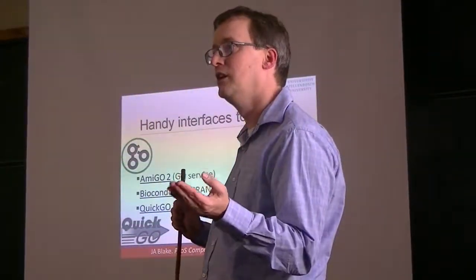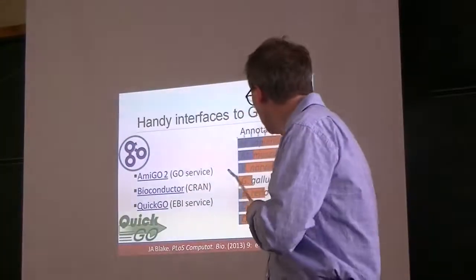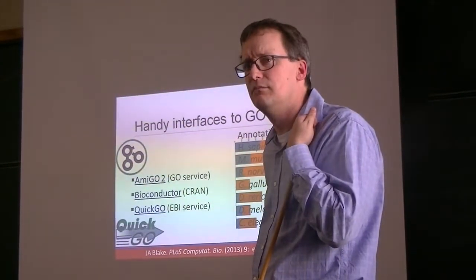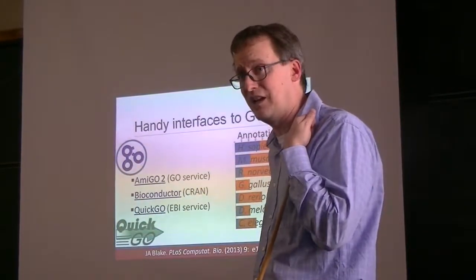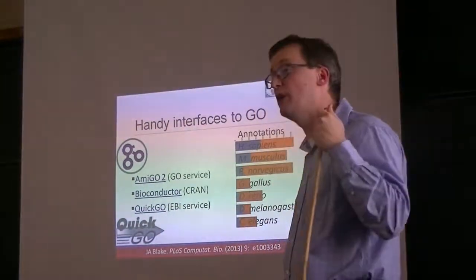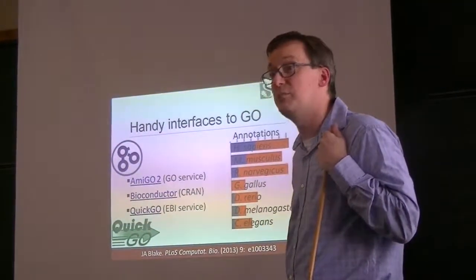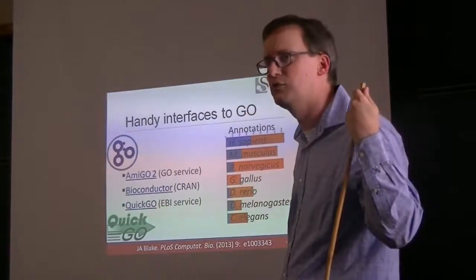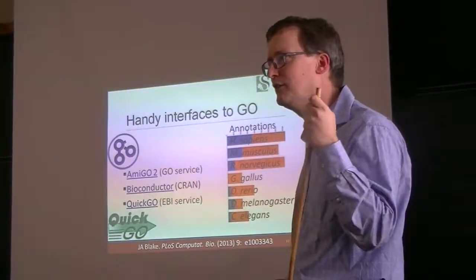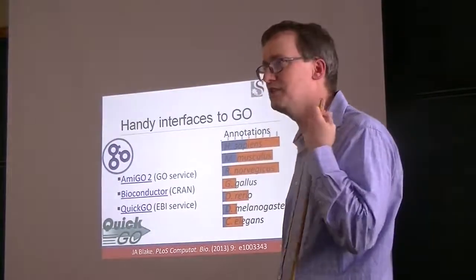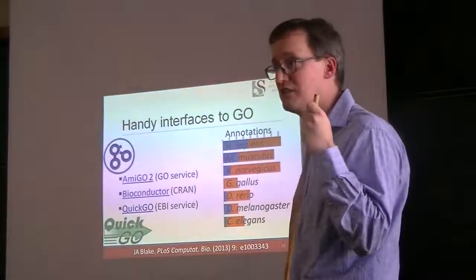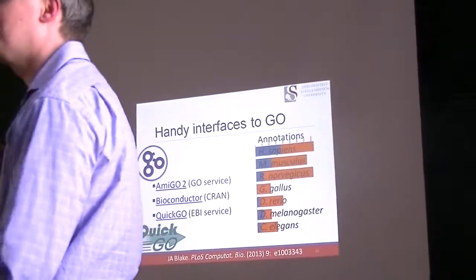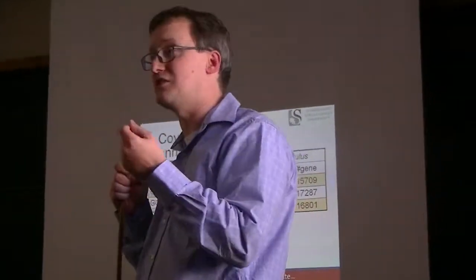Mice and rats, these organisms get used so frequently that having up-to-date gene annotations matters. Gallus gallus is the chicken. The chicken has relatively short numbers of annotations by comparison. Danio rerio, zebrafish, is pretty well documented by comparison to the chicken. D. melanogaster, the fruit fly. C. elegans is the worm. We've done some really great studies about the molecular biology of the worm. We have a lot of different species that have been annotated well, and taking advantage of it just makes a lot of sense.